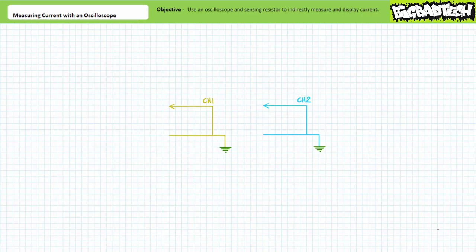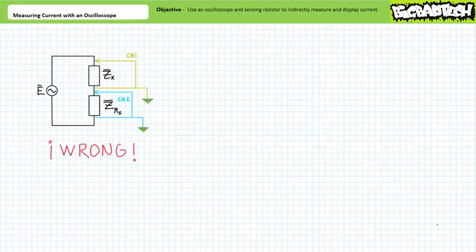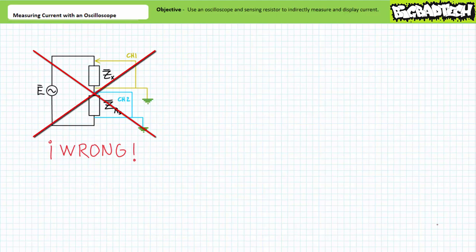Consider the wrong way to employ a multi-channel oscilloscope in a series circuit consisting of our element of interest and the sensing resistor in series. Channel one is measuring voltage across our element of interest with respect to ground. Channel two, however, is measuring voltage across the sensing resistor where both terminals of the sensing resistor have been grounded. Given both terminals of the sensing resistor have been placed at the same ground potential, there will be no voltage drop across it. Do not do this. I will tie you to a goat and throw you in a hole if I ever see you using an oscilloscope in this fashion.